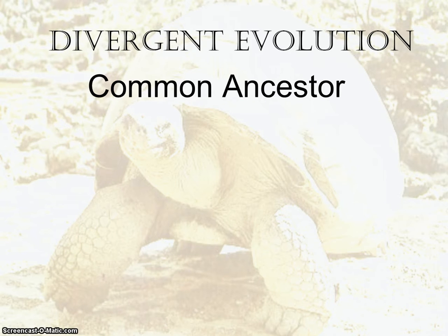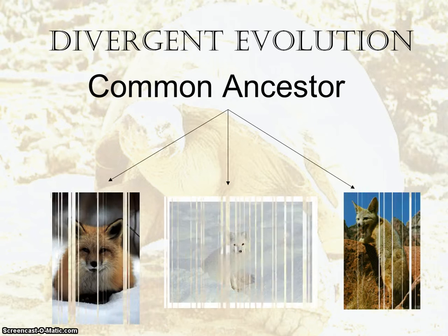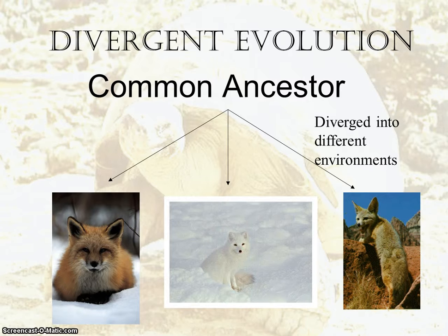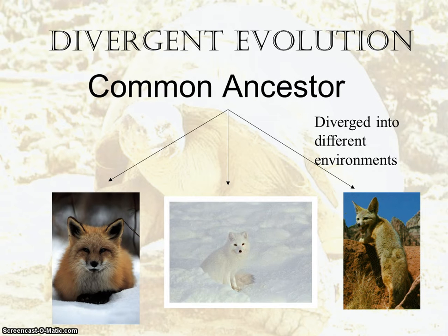Another example of divergent evolution is the fox. You've got the red fox, the arctic fox, and the Tibetan fox. These three foxes, once again, are very similar genetically; however, they are considered different species because of the physical traits that evolved due to the environments they found themselves in. This is another example of what divergent evolution represents.